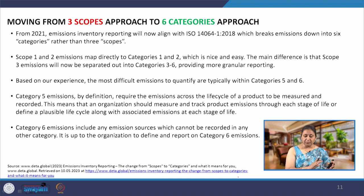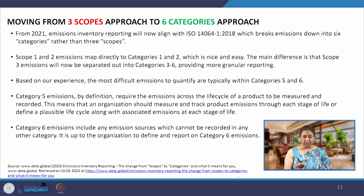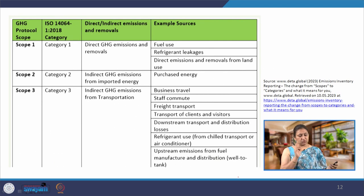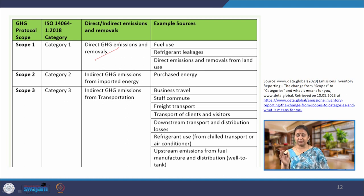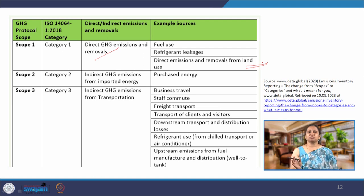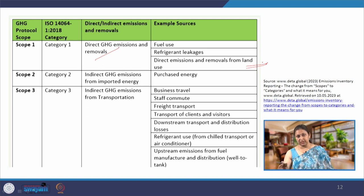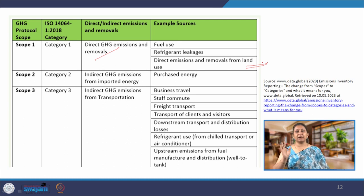We also have a 6-category approach aligned with ISO 14064. Scope 1 maps to category 1: direct GHG emissions and removals, including fuel use, refrigerant leakages, and direct emissions from land use such as agriculture and forestry. Scope 2 maps directly to category 2: indirect GHG emissions from imported energy — purchased energy whose production occurs elsewhere. Scopes 1 and 2 are directly captured in categories 1 and 2.